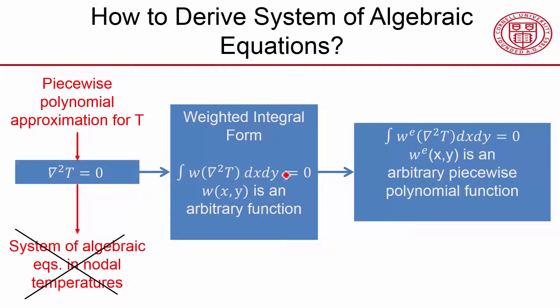So what we'll do is we'll satisfy it for a weighting function for which we pick a shape. So we pick a shape for T, element by element. We pick a shape for W, and then integrate over the domain.